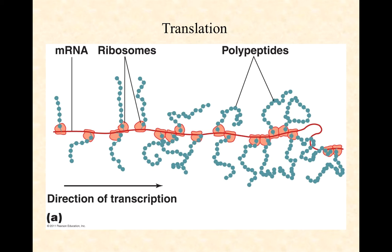Translation in a prokaryote can take place essentially at the same time as transcription. In transcription, you've got an RNA polymerase reading a gene and creating an mRNA transcript. The ribosome can actually jump right onto the beginning of that mRNA transcript while the transcript is still being produced, and begin reading the three-letter codons along that mRNA, telling it which amino acids to put into place.